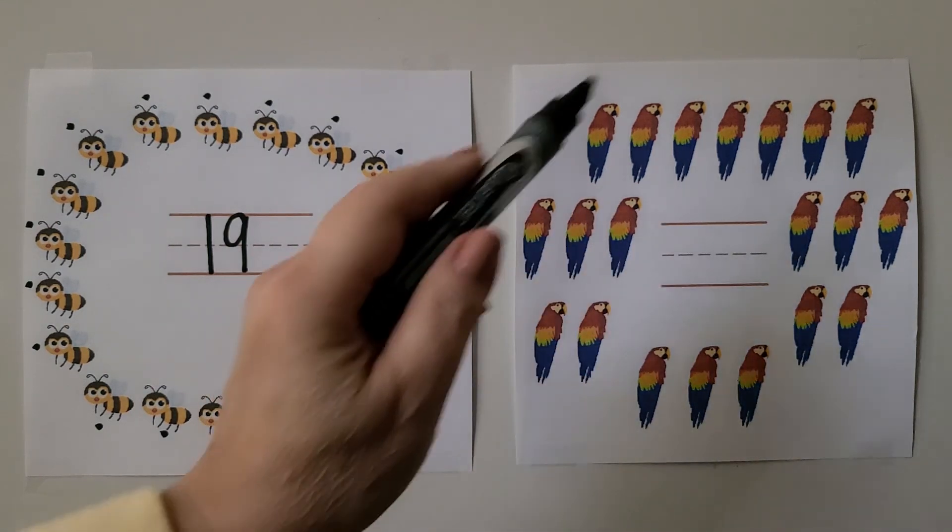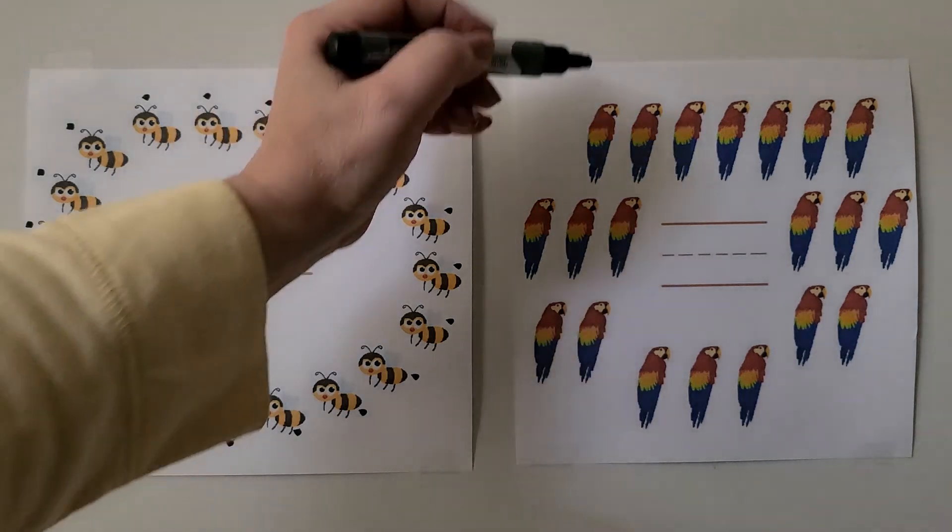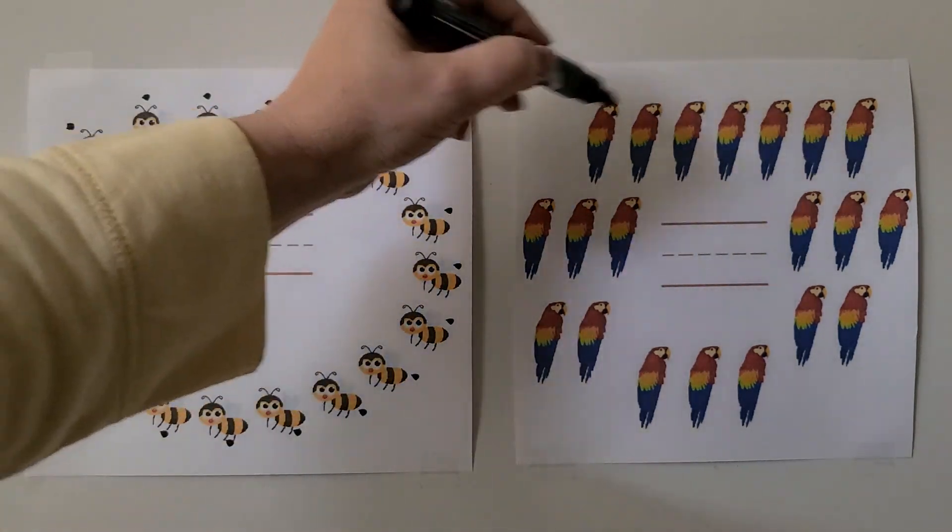Here we have many parrots. We need to count them and write the number. We can use dots to help us count.